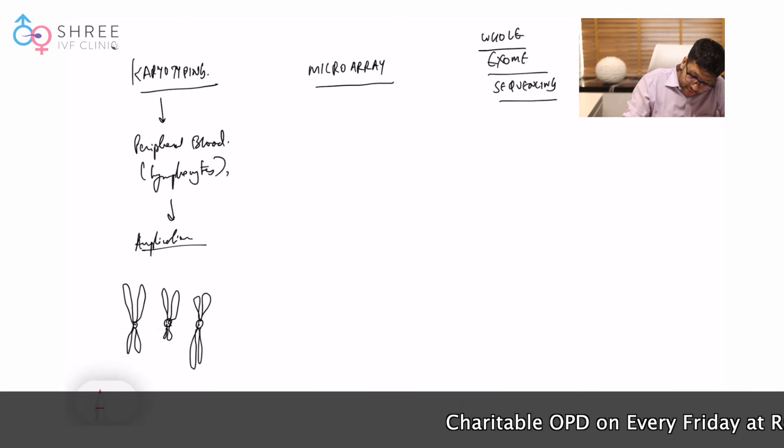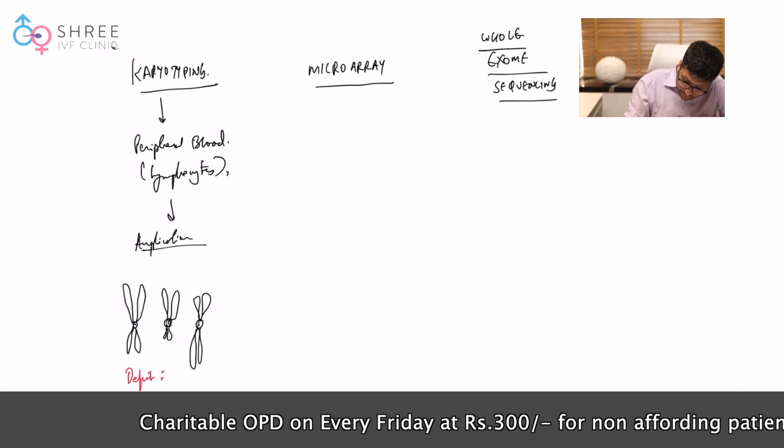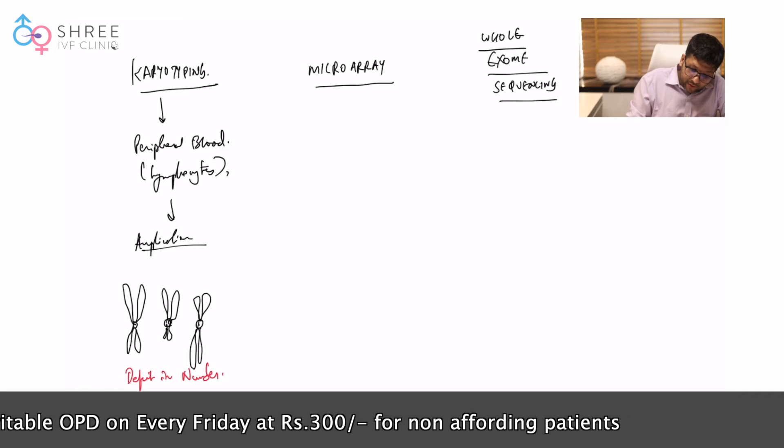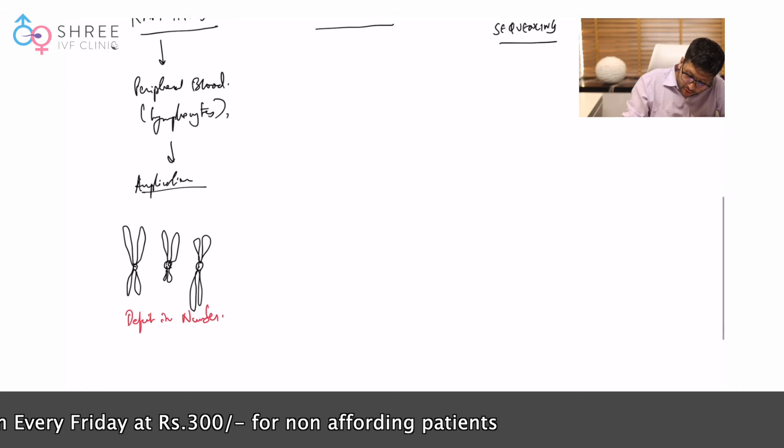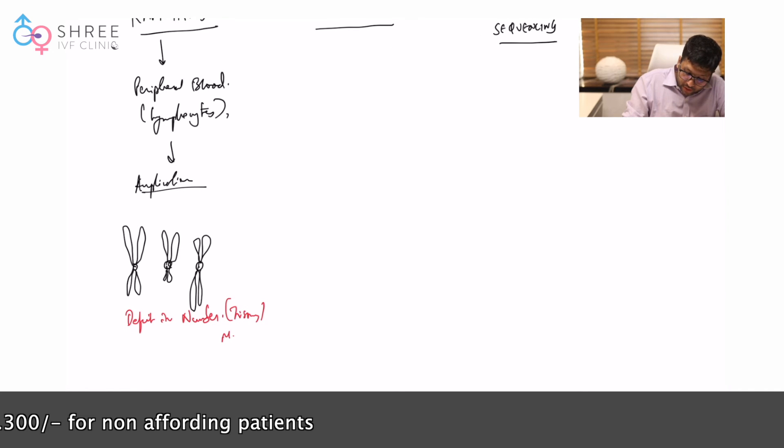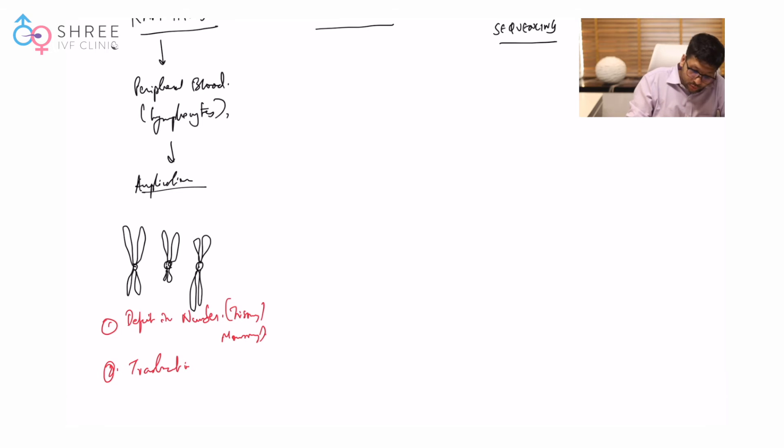What is karyotyping going to help us understand? It will help us understand if there is a defect in number - trisomy, monosomy, all these things. Simultaneously, it will help us understand translocations. Chromosome 3, one part became in one, one's part became in three. We need a geneticist who will tell us there is a balanced translocation, unbalanced translocation, short arm has gone, long arm has gone.